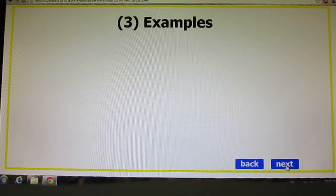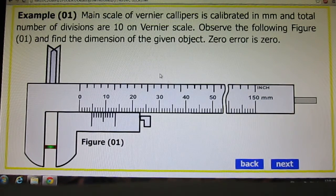Let us see a few examples. Main scale of vernier calipers is calibrated in mm and total number of divisions are 10 on vernier scale. Observe the following figure number 1 and find the dimension of given object.